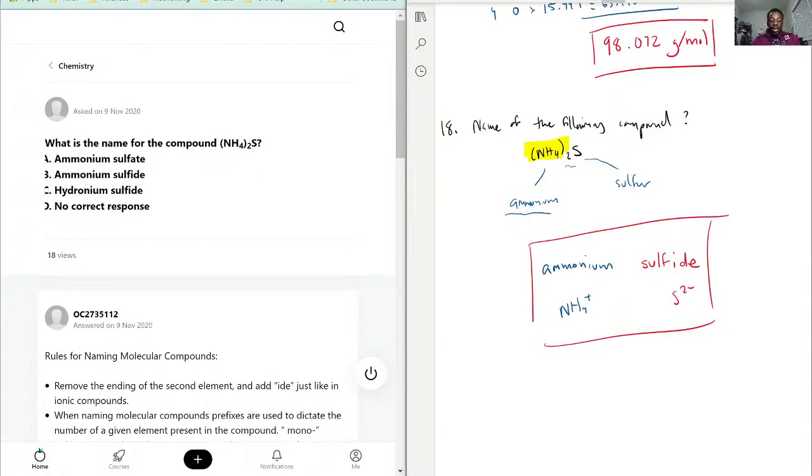With that being said, ammonium sulfate, that wouldn't be it. Sulfate is SO4 2 minus, that's the sulfate ion. So B is looking better. Hydronium would be H3O plus, that's hydronium. And D, no correct response, we can't use that because indeed, our answer is found in B.